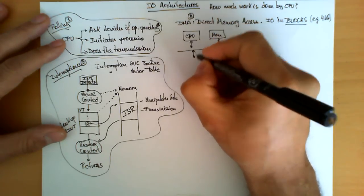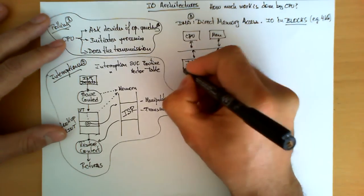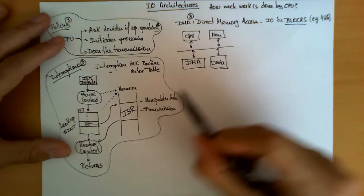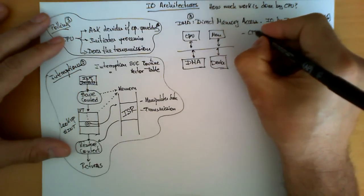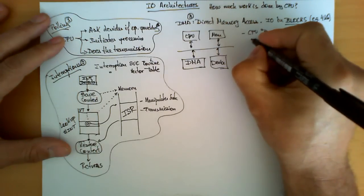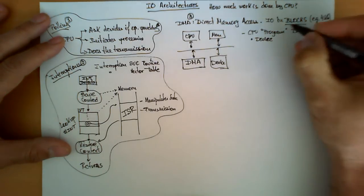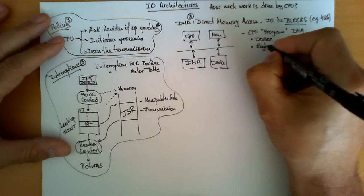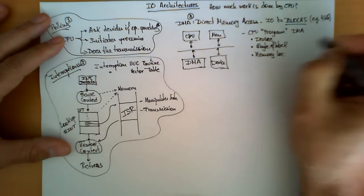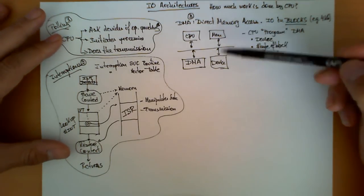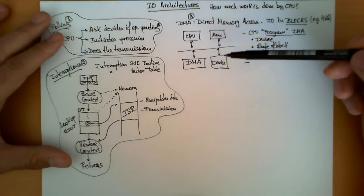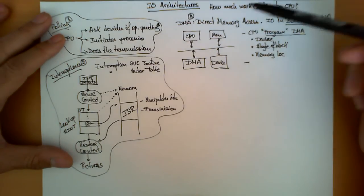The solution adopted by designers is the DMA strategy, where a new circuit — the DMA controller — is connected to the bus to remove the CPU's responsibility for data transmission. The CPU now only needs to program the DMA operation by providing three things: which device needs to be served, the number of bytes in the block, and a memory location for the transmission of information either from the device to memory or from memory to the device. The DMA then supervises all data transmission between the device and memory, while the CPU can keep executing regular instructions.